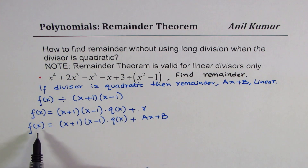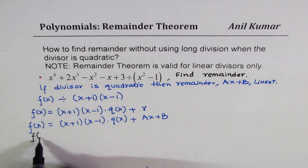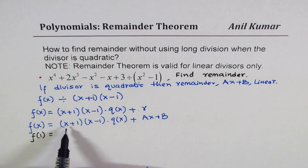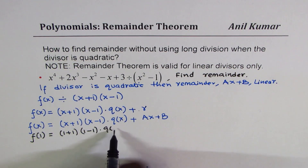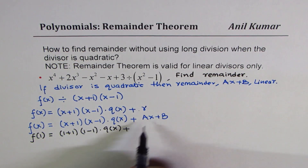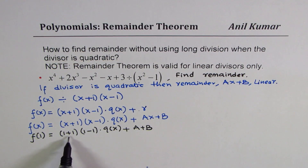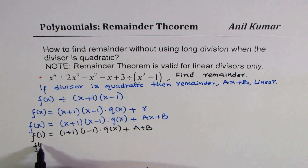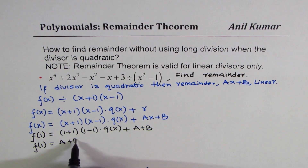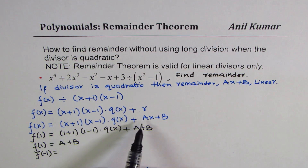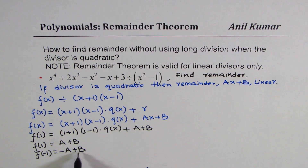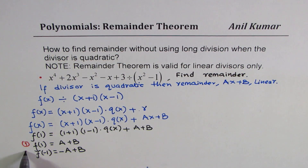Now, see what happens when I substitute x equals 1. f of 1 equals 1 plus 1 times 1 minus 1 — now 1 minus 1 is 0 — times any quotient, plus a plus b. The first part becomes 0, so we have f of 1 equals a plus b. Similarly, if I write f of minus 1, then this factor becomes 0, and I get minus a plus b. So, I get two equations.